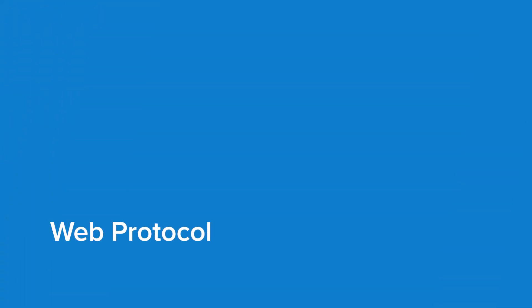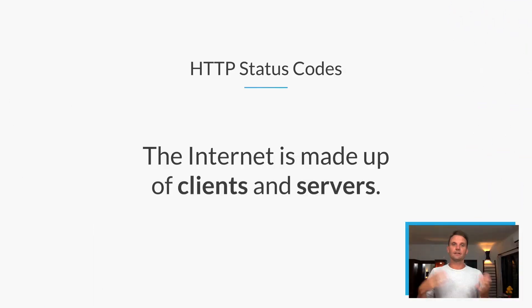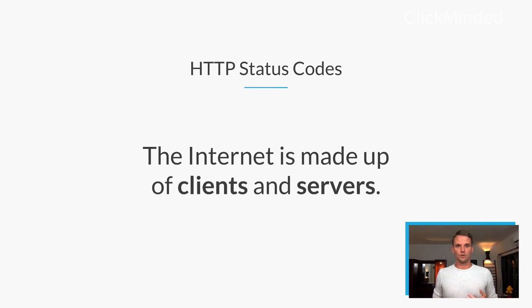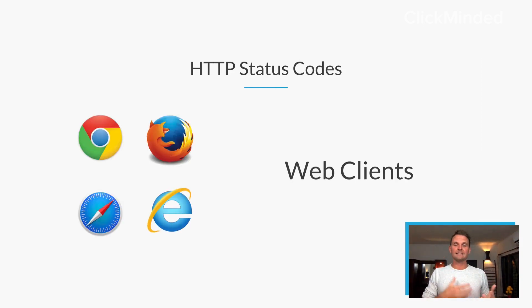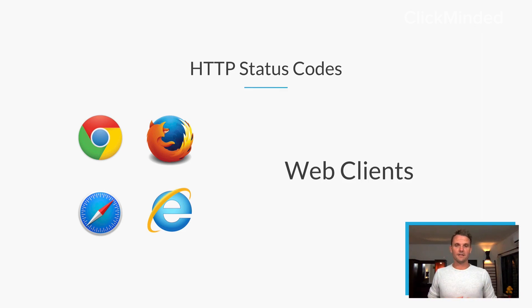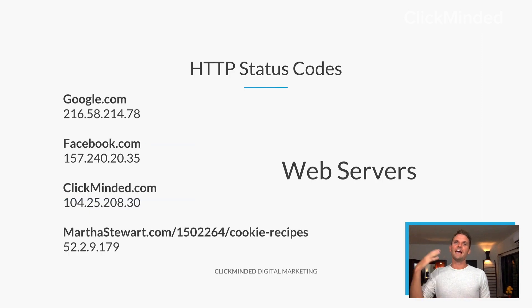Before we dive into the 200 status code, I just want to do a brief overview on web protocol basics. The internet is made up really of two core things, and that's clients and servers. You have clients — web clients — that's your browser. Maybe it's Chrome, maybe it's Firefox, maybe it's Safari, or maybe it's Internet Explorer, but you're usually accessing the internet through one of these clients.